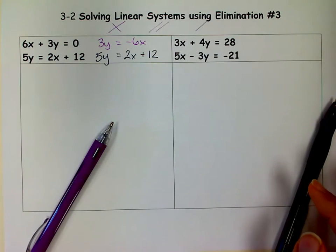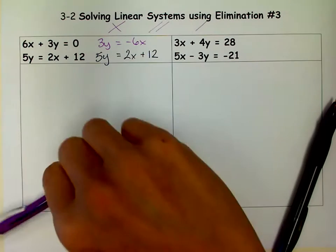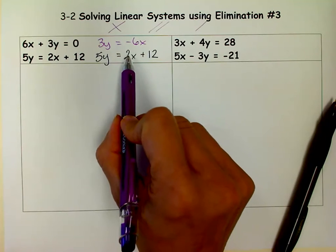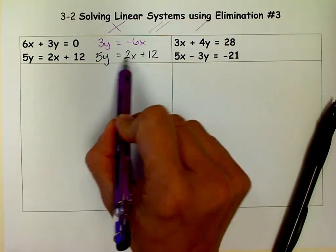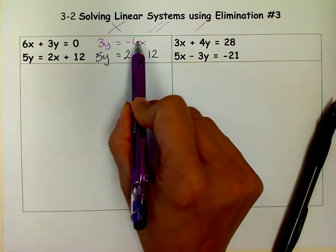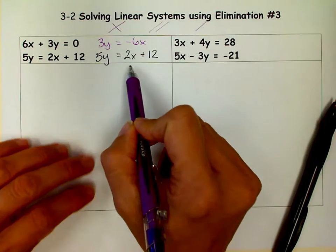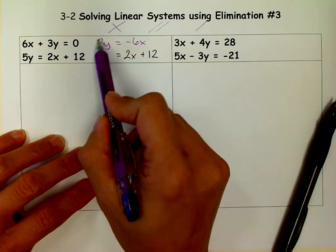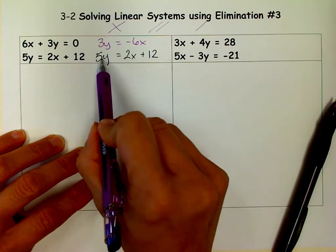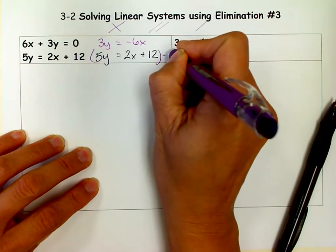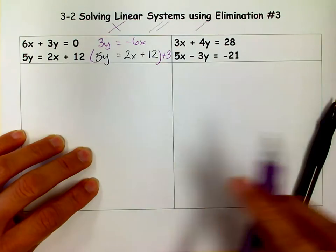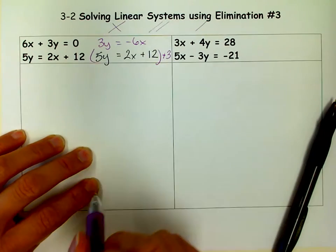But now I need to eliminate a variable. So I'm looking and I'm thinking it'd probably be easier to eliminate this 2 because I can multiply this whole equation by 3. If I get this to be a 6X then it would cancel with that. So that's what I'm going to do. I could get rid of these. I could multiply this whole equation by 5 and this whole equation by 3, negative 3 to eliminate those. But I think it's probably easier just to do this one. So I'm going to multiply this whole equation by a positive 3.